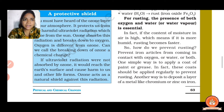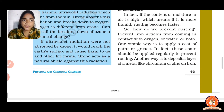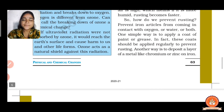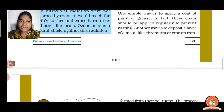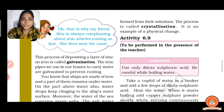How do we prevent rusting? One simple way is to apply a coat of paint or grease, and this coat should be applied regularly. Another way is to deposit a layer of metal like chromium (Cr) or zinc (Zn) on the iron. This process of depositing a layer of zinc or chromium on iron is called galvanization. The iron pipes used in our homes to carry water are galvanized to prevent rusting.